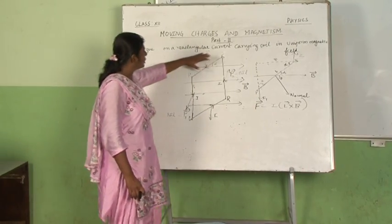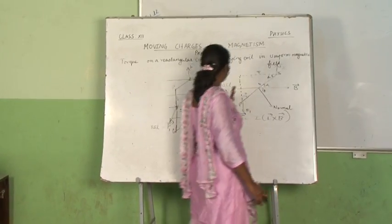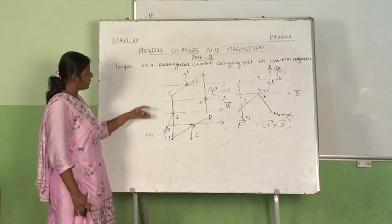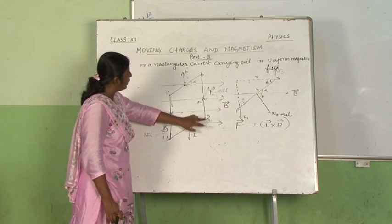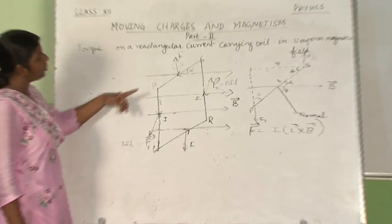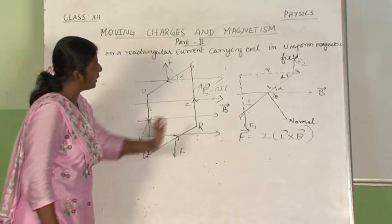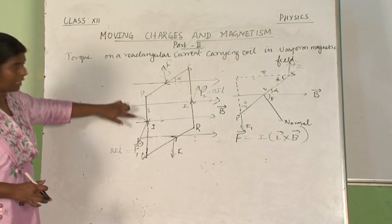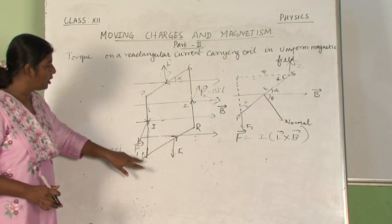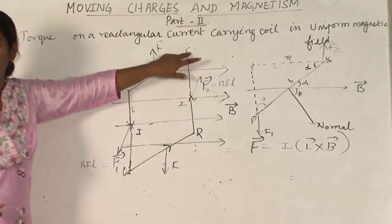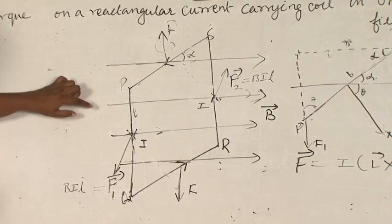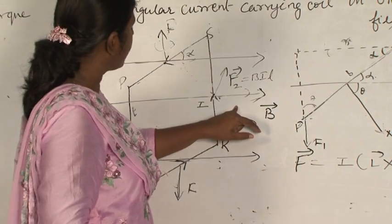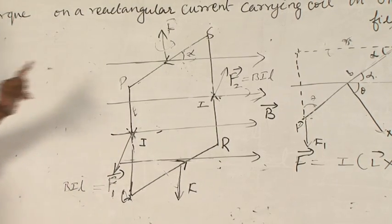Now we are going to see torque on a rectangular current carrying coil in a uniform magnetic field. We have considered a rectangular coil P, Q, R and S. The current is flowing in the anti-clockwise direction from P to Q, Q to R, R to S, and S to P. The coil is suspended in a uniform magnetic field B vector. There are four forces acting on it: P to Q is the first segment, Q to R is the second, R to S is the third, and S to P is the fourth. F1, F2, F3, and F4 are the forces acting on each respective segment.